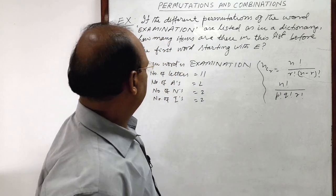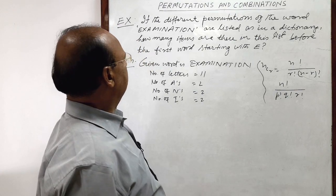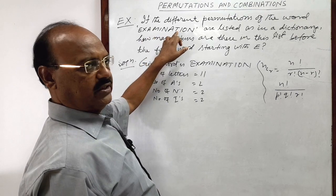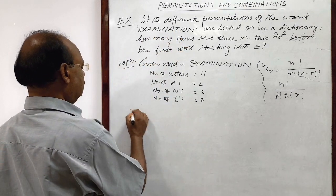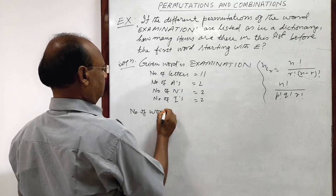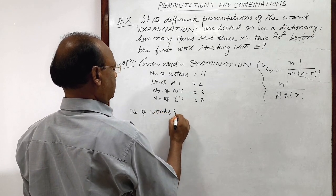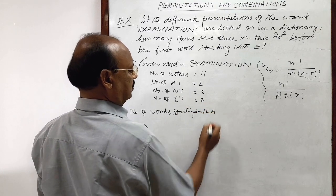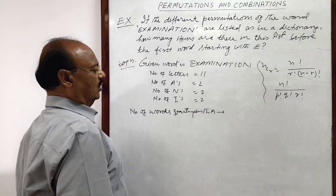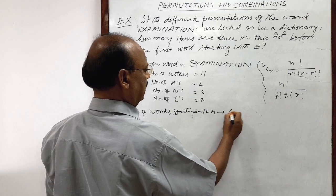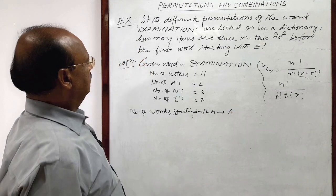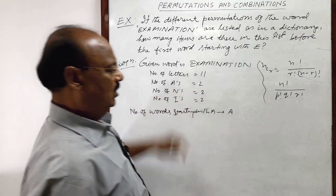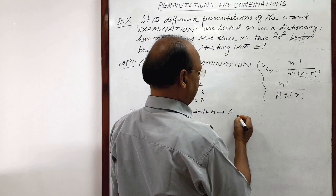So you see, you know that in a dictionary first word starts with A. A is here. So number of words starting with A: first letter will be A, correct? And other than this one A, we are having 10 letters. So there will be arrangement of 10 letters here.